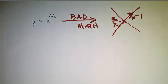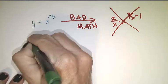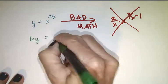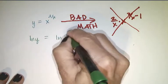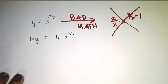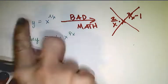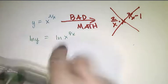What we will do is take the natural log of both sides. The natural log of y equals the natural log of x to the 2 over x. If this is true, then this is true.